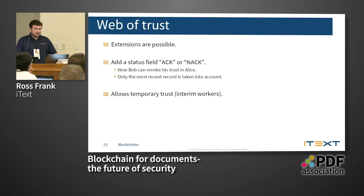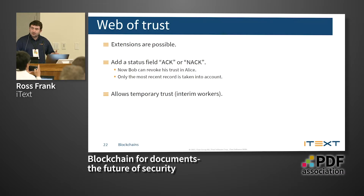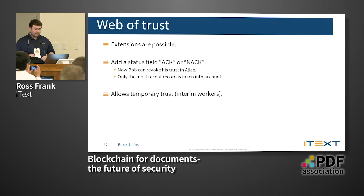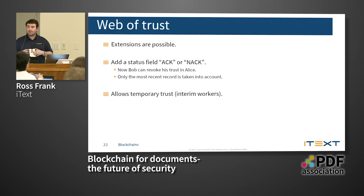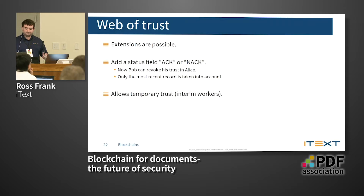In the web of trust, extensions are possible — you can add a status field such as 'acknowledge' or 'not acknowledge.' Bob can revoke his trust and only the most recent one is taken into account. It can also be used for interim trust, where you want to trust a certificate for a certain amount of time — similar to how certificates work now with revocation.